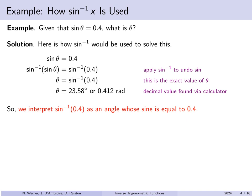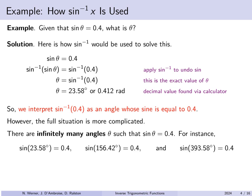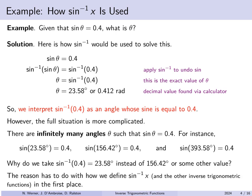We interpret the arc sine of 0.4 to be an angle whose sine is 0.4. But the full situation is more complicated — there are infinitely many angles that have a sine of 0.4. For example, sine of 23.58 degrees is 0.4, but so is sine of 156.42 or 393.58 degrees. The reason we pick 23.58 degrees has to do with how we technically define the arc sine function in the first place.